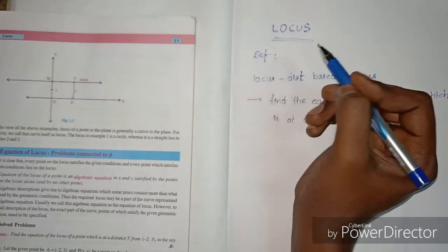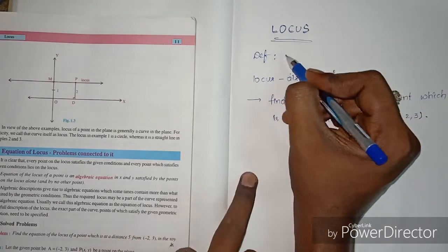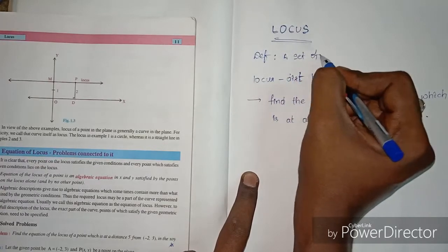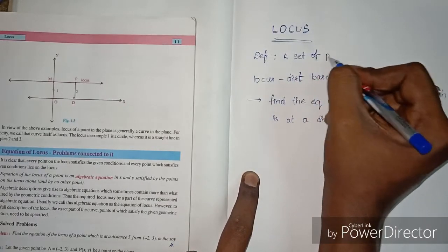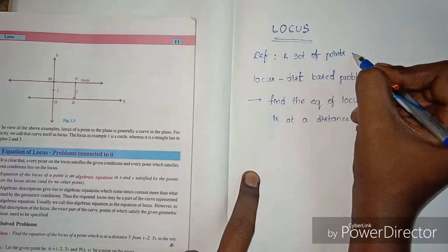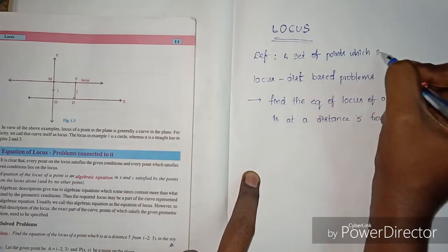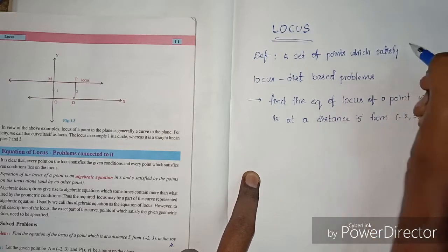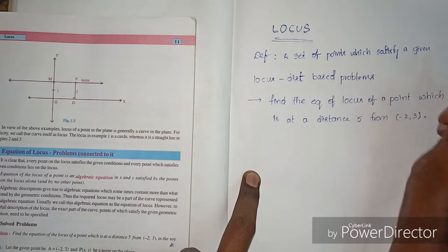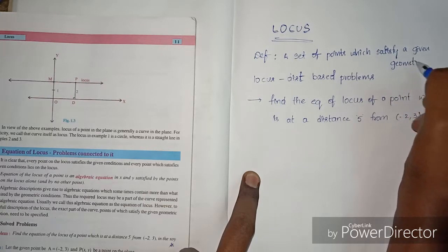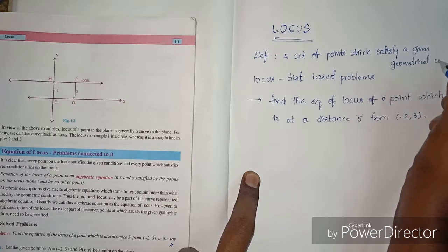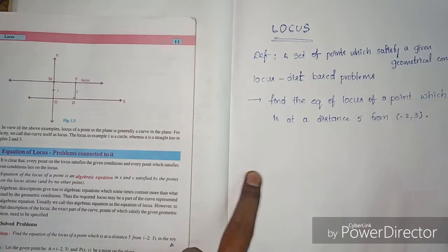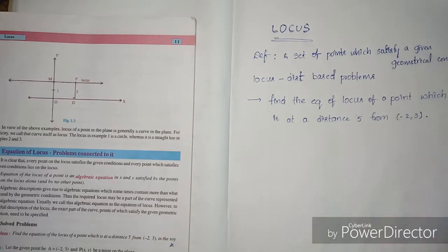Locus is defined as a set of points which satisfy a given geometrical condition. Locus is defined as a set of points which satisfy a given geometrical condition.